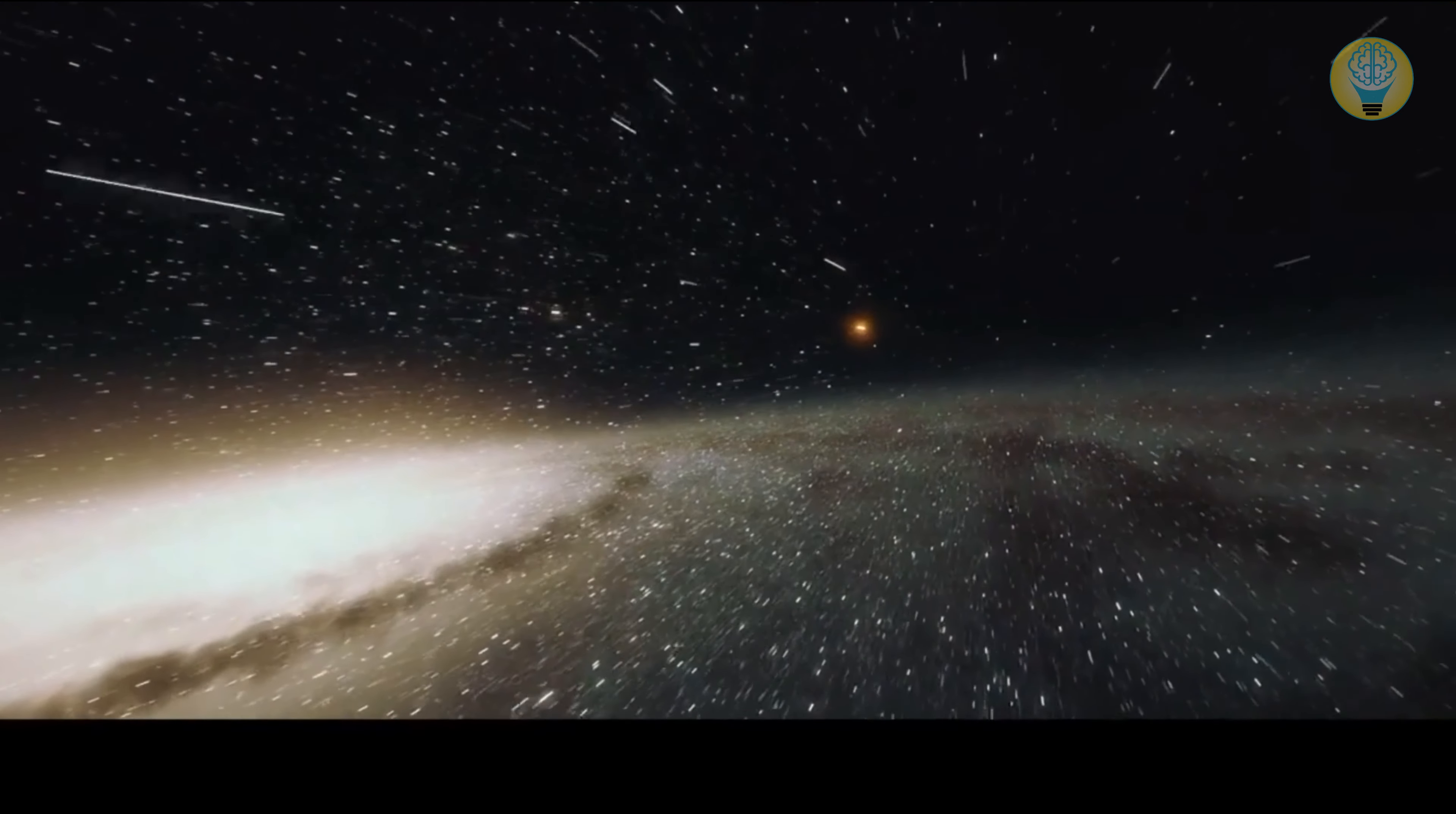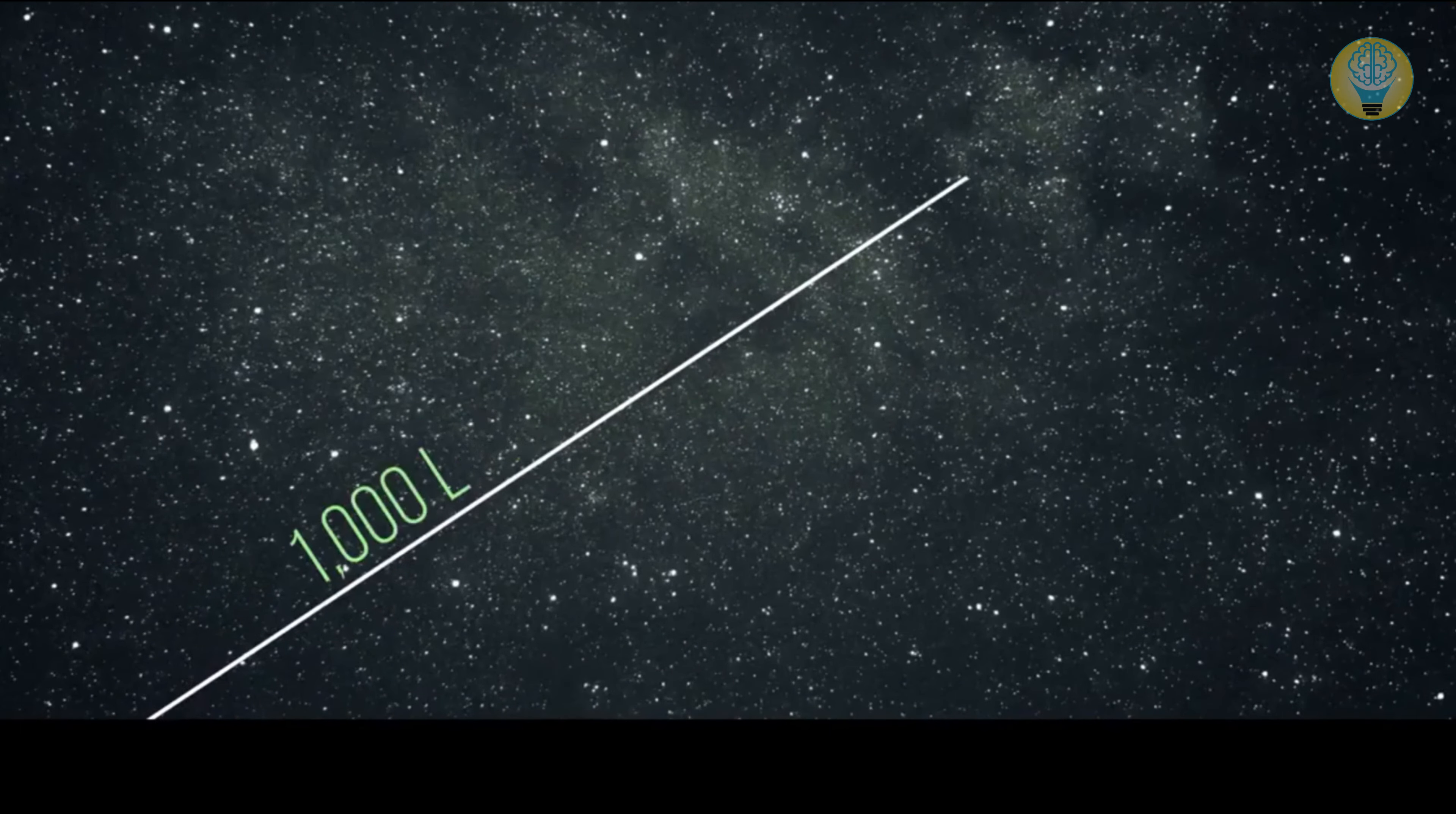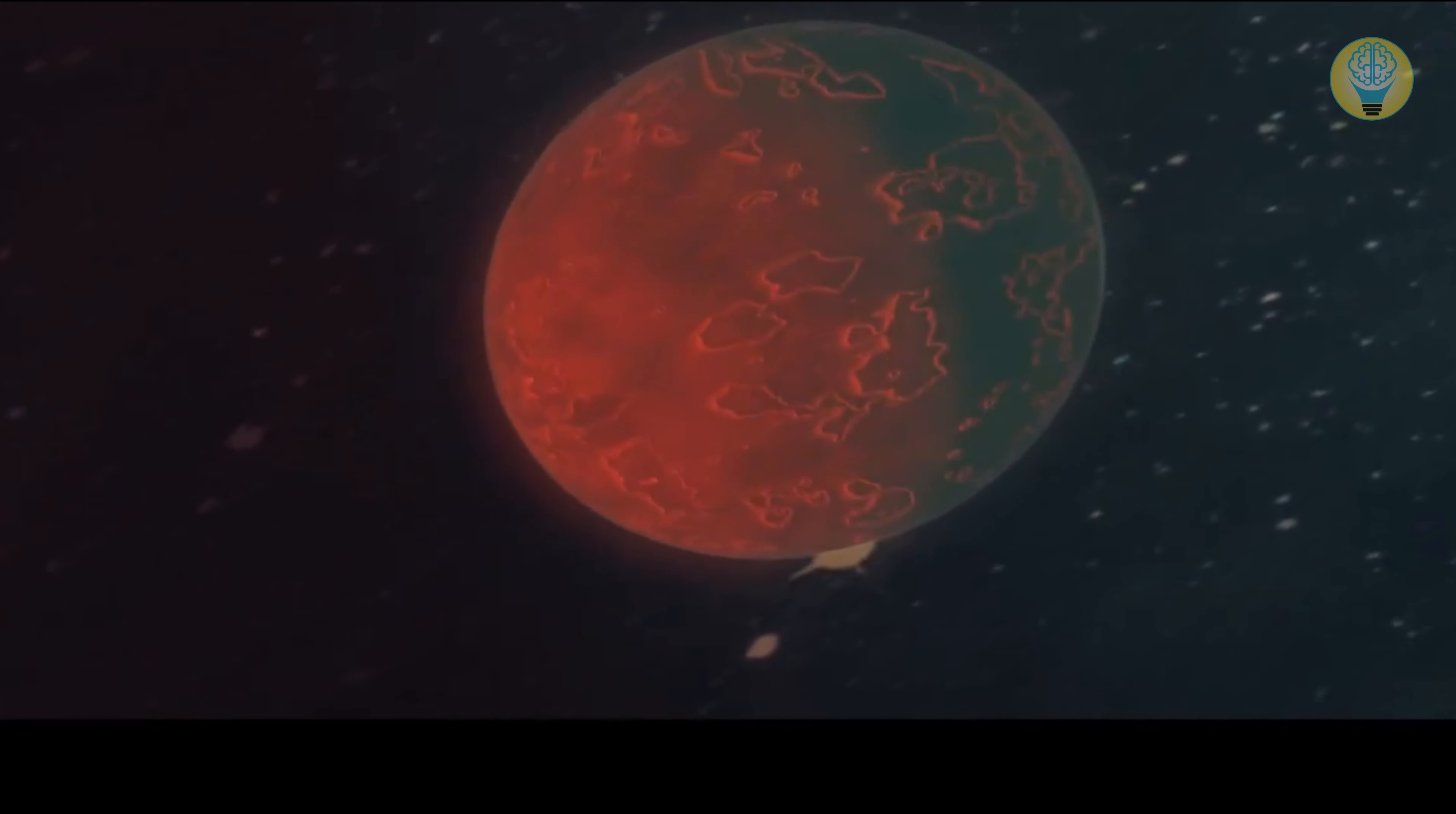Number 6. The Football Planet. Get ready to have your mind blown, space enthusiasts, because we've just discovered the ultimate football-shaped planet. And it's unlike anything we've ever seen before. Meet WASP-103b, the ultra-hot exoplanet that's more than 1,000 light years away from Earth.